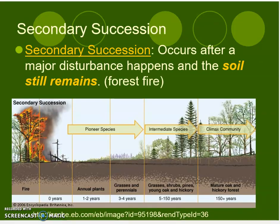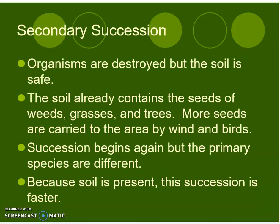The second type of ecological succession is termed secondary succession. Secondary succession occurs after a major disturbance happens and the soil still remains — for example, after a forest fire. During secondary succession, organisms are destroyed but the soil is safe.